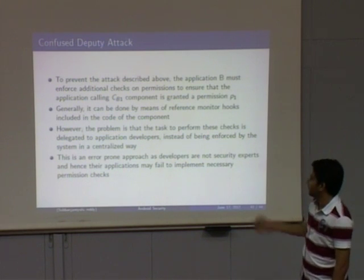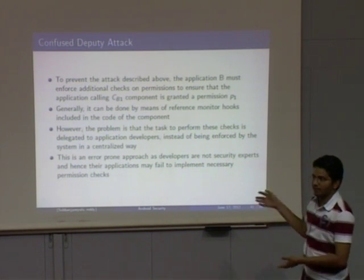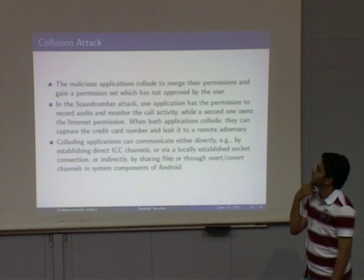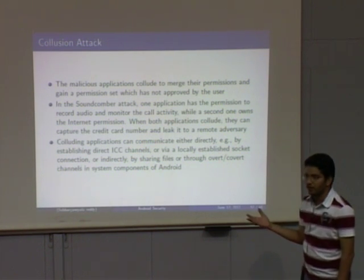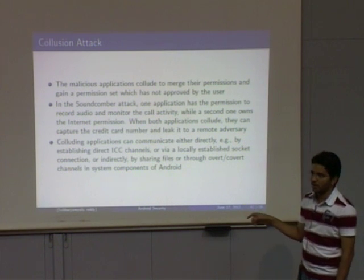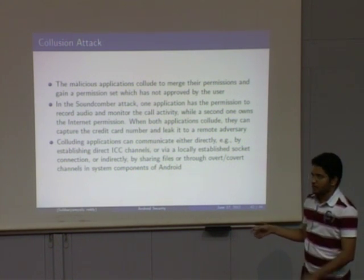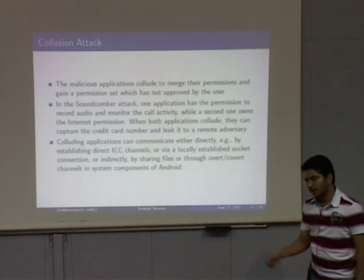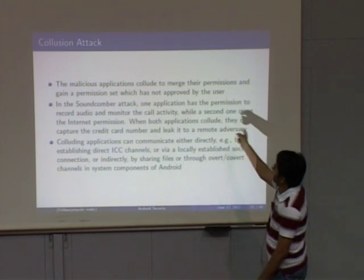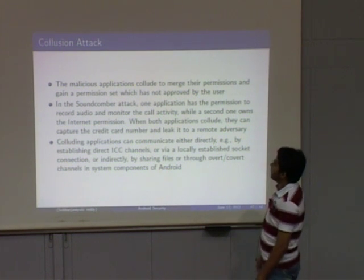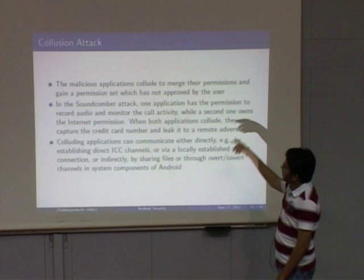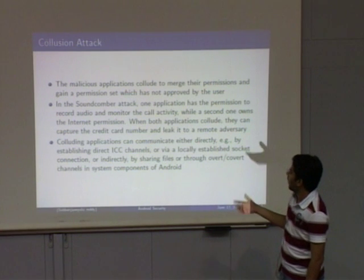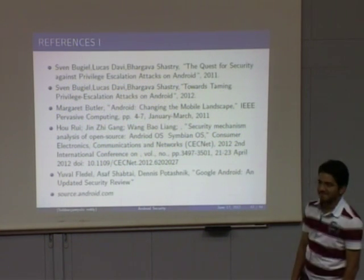Another attack is collusion: two applications from the same vendor with the same digital certificate and shared secret key — one application can use the other's resources. For example, one application has permission to record audio and monitor call activity, while the second application has internet permissions. One application records the call, and the other sends it over the internet. These are the references. Thank you.